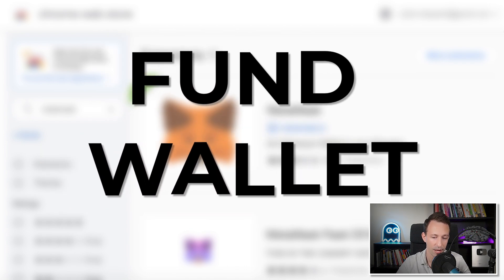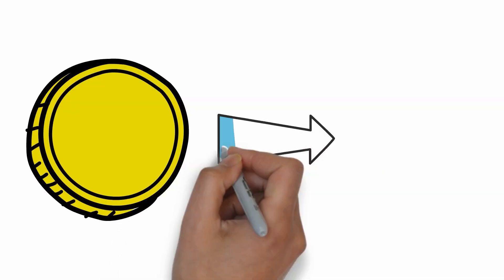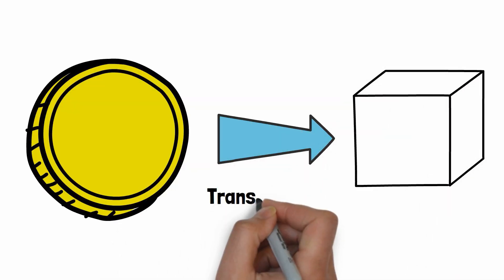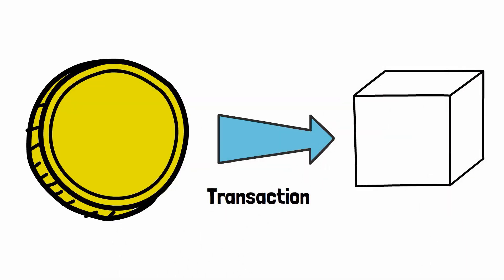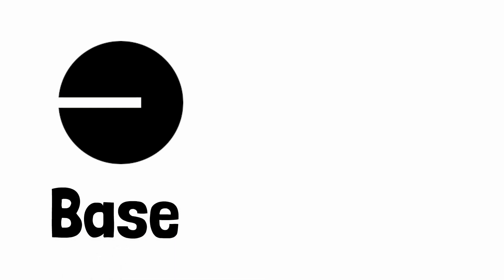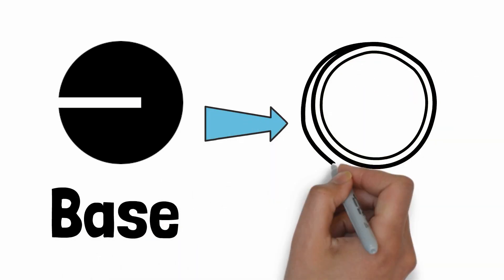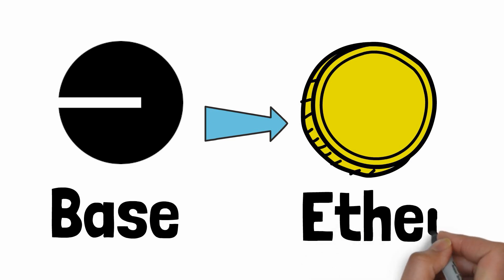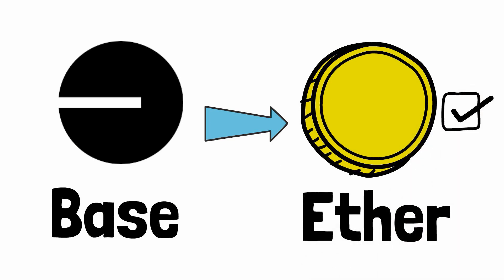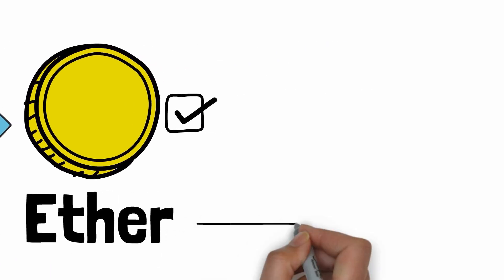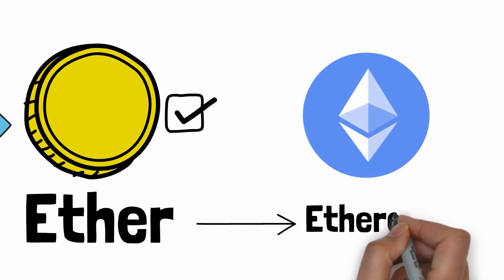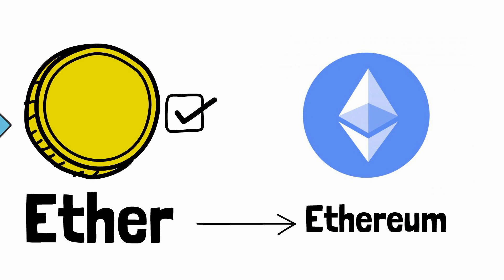The next step is to fund your wallet. When you deploy a token on the blockchain, technically it's what we call a transaction. And to send this transaction, you need to pay transaction fees. Generally, Tokpad can deploy tokens on Base, one of the most popular blockchains. And to pay transaction fees on Base, we need some Ether. Base doesn't have its own native currency. Instead, it uses Ether, the native currency of another blockchain called Ethereum.